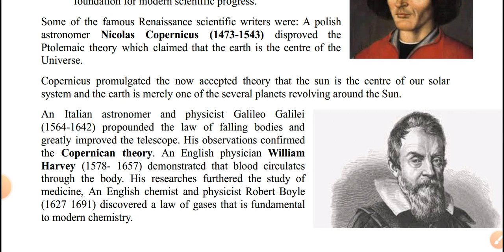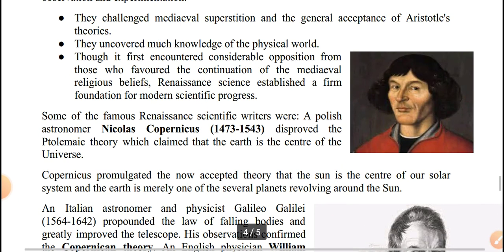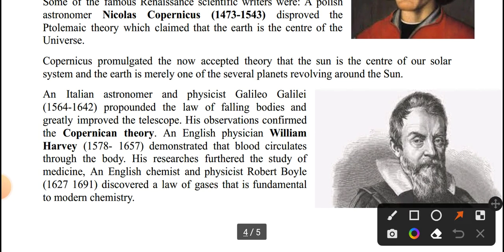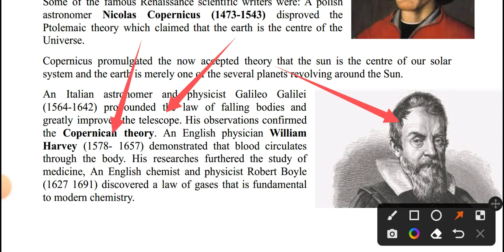Galileo used a telescope, which proved more than Copernicus had shown. His observations confirmed the Copernican theory that the Sun, not the Earth, is the center of the universe.